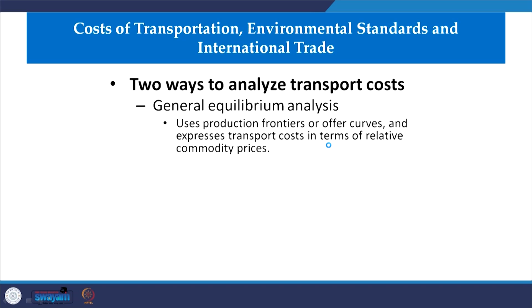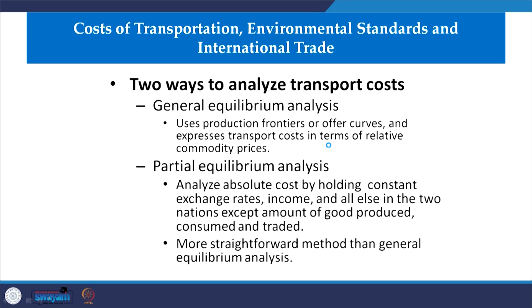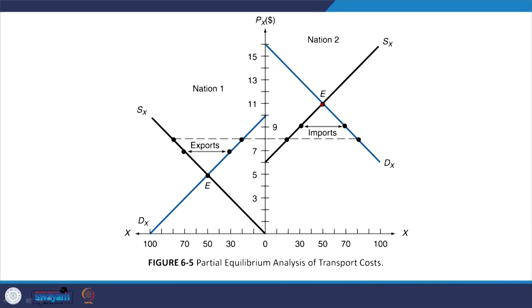Transportation cost can be identified in a partial equilibrium setup with demand and supply figures. There might be an equilibrium price; whatever one country exports will be absorbed as imports by another. But if transportation cost is added, prices shift and the extent of production changes. Accordingly there will be a new extent of production, and therefore HO theory still holds valid — transportation cost is simply an addition to the model.